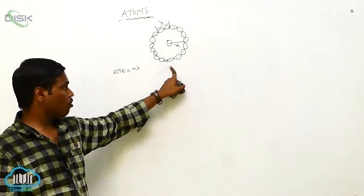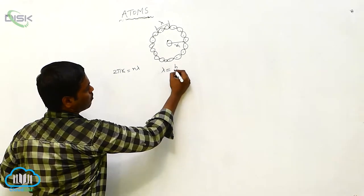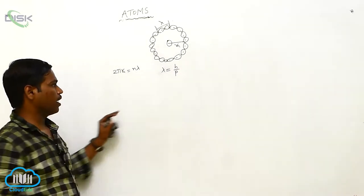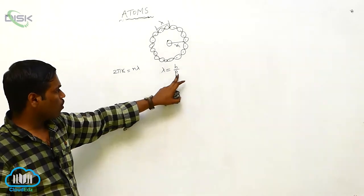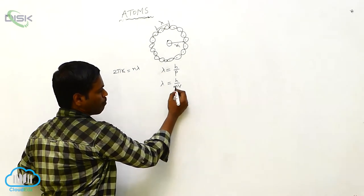According to de Broglie, the wavelength lambda is equal to h by p. This momentum p is equal to m into v.